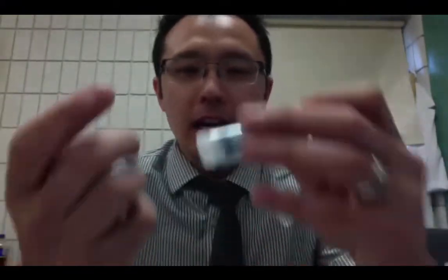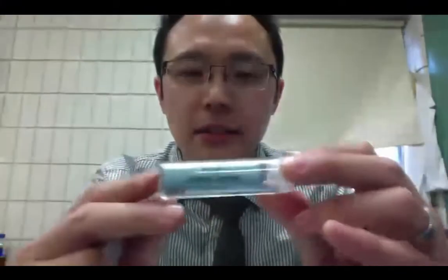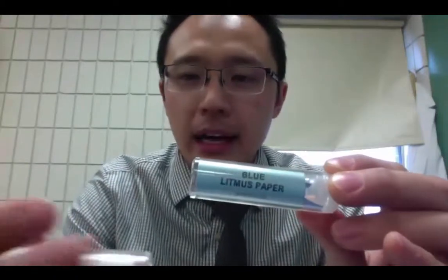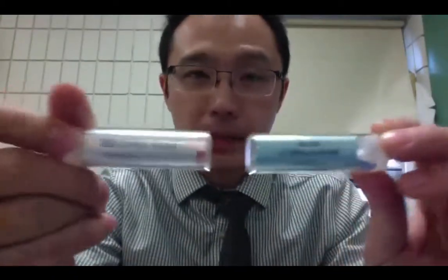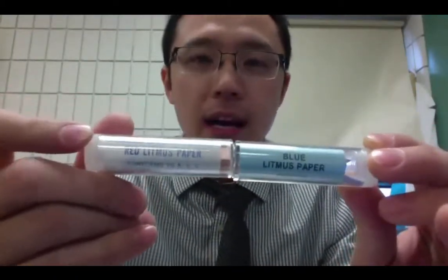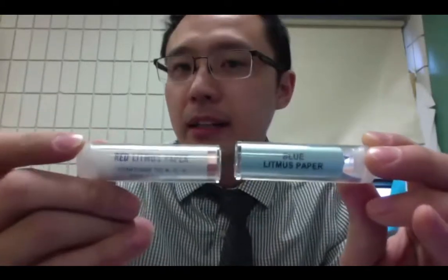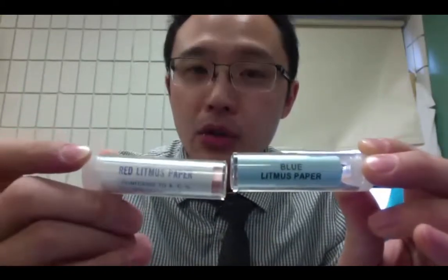What I have here is, you might have seen this in your class, this is your blue litmus paper and I also have some red litmus paper. So these are two different colored litmus paper that can determine your pH of your solution. Another one that I have, you might have seen this one,